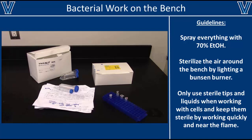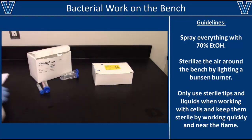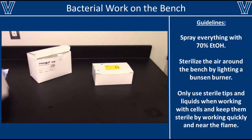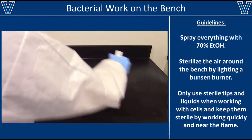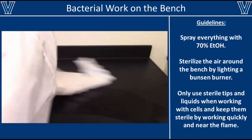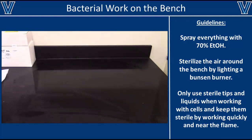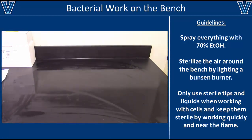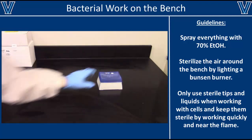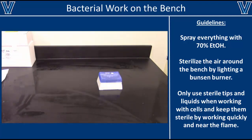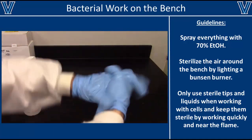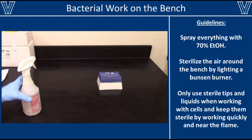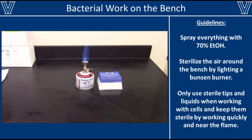Bacterial work occurs mostly on the bench instead of the biological safety cabinet. To prepare the bench, start by removing as many materials from your workspace as possible. Thoroughly spray down the area with 75% ethanol and wipe it down with a paper towel to completely sterilize the bench surface. Then sterilize all your solids including pipette tips and your gloves. Remember to thoroughly dry the ethanol off your gloves before lighting any Bunsen burners since ethanol is highly flammable.